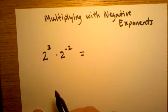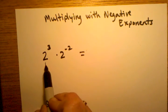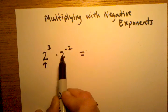In a problem like this, we just have one negative exponent. But as we talked about in the last video, when we're multiplying numbers or exponents that have the same base - here we have a 2 and here we have a 2 -